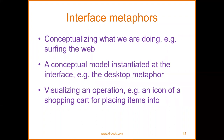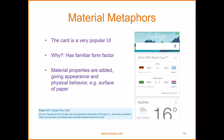Then we have visualizing and operation — an icon of a shopping cart for placing items. There are a lot of things regarding material metaphors. For example, in Google we have the card, which is very popular as a user interface — it is a familiar form factor because properties give it appearance and physical behavior, like the surface of paper.